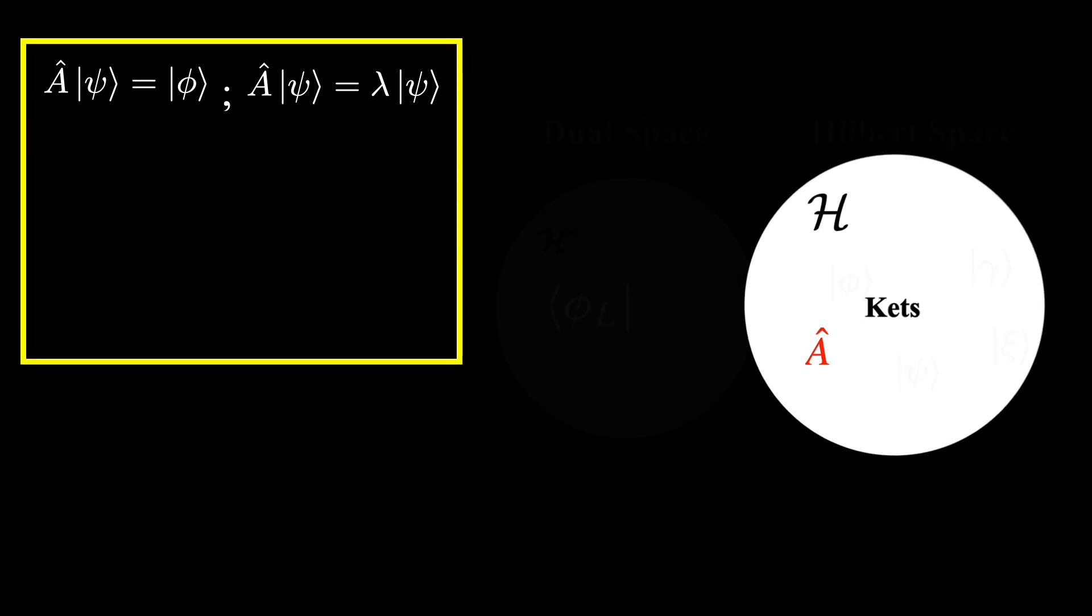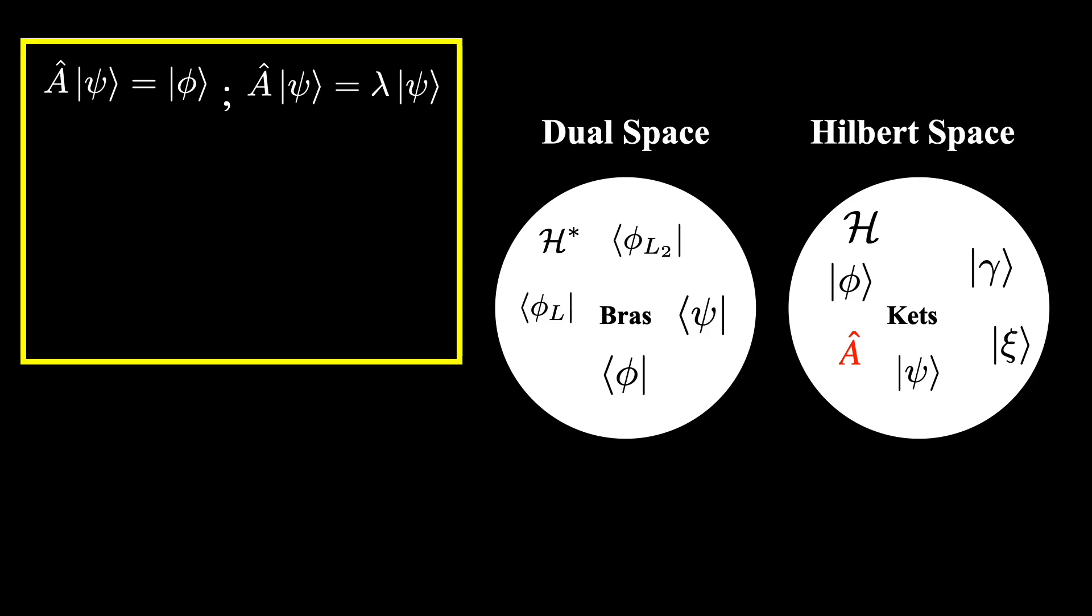Okay, so what about bras? Can operators act on them? Remember, every Hilbert space of kets will have an associated dual space of bras. It turns out that any operator can also be applied to a bra to produce another bra. In this case, we will write the operator as its adjoint and it will always act on the bra from the right. And if you act on the bra that is dual to an eigenvector in the Hilbert space, then it will also be an eigenvector in the dual space with an eigenvalue that is the complex conjugate of the eigenvalue in the Hilbert space. And in general, these eigenvectors will be called eigenkets or eigenbras depending on which space they happen to be living in.